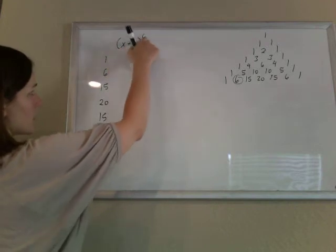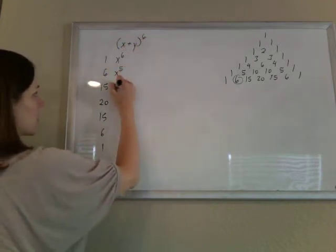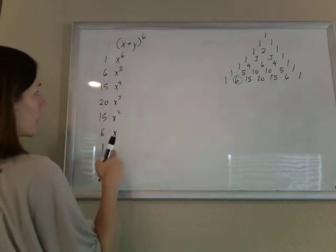Then I'm going to take the x and start it with the 6th power and run them down. x to the 6th, x to the 5th, x to the 4th, x to the 3rd, x squared, x to the 1st, no x's.